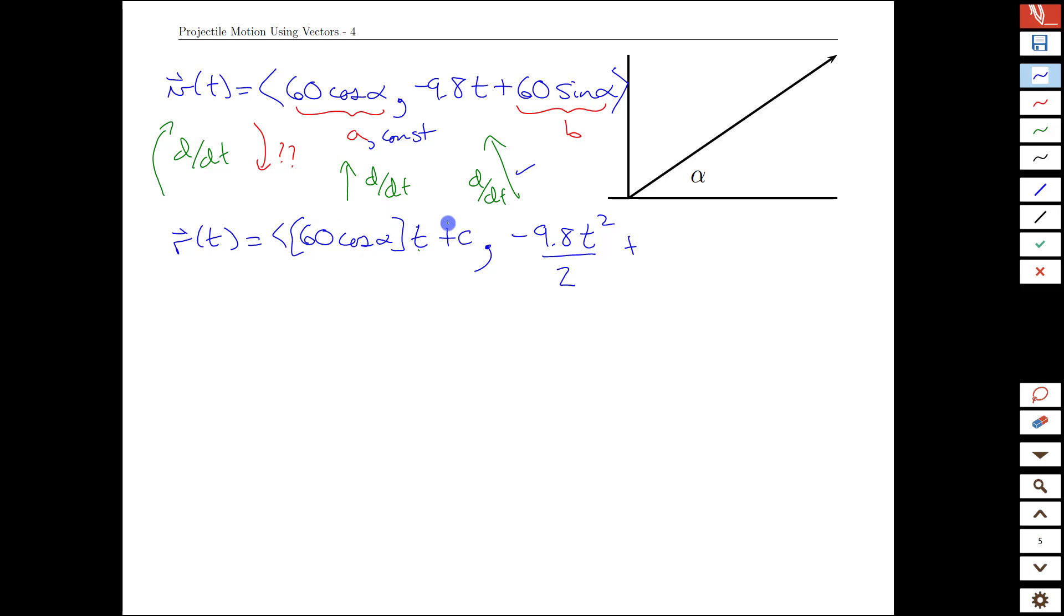And because derivatives work term by term separately, we can use exactly the same logic for the second term. It'll be 60 sin(alpha), which is a constant, times time. And just so we don't neglect our possibilities for constants at the end here, we also have the potential of the plus d at the end. And we can check when we differentiate this with respect to time, we would indeed get these factors here.